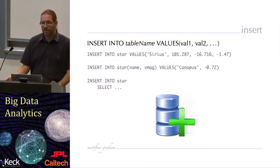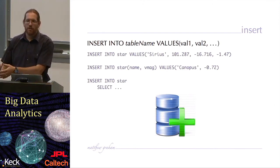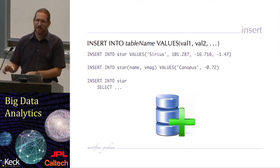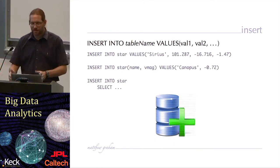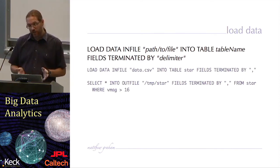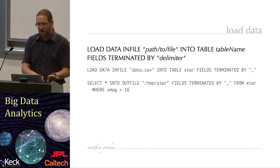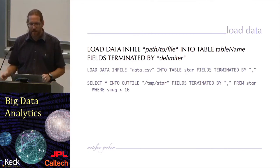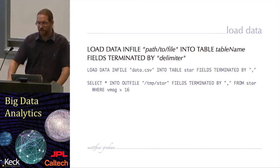I can populate a table with an insert statement as the result of a select operation on another table or set of tables. So I write the query as a select statement, make sure it returns the correct values, and use that as the input into an insert statement, combining the two and running as a single operation. If I want to do a bulk load of data into a table, in MySQL I can use the load data statement, specifying the path to the file on my hard drive, the table name, and the delimiter — for example, loading a comma-separated variable data file into table star with fields terminated by commas.